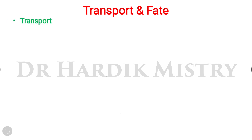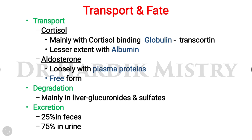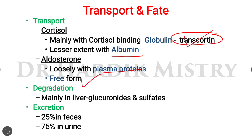Regarding transport and fate of steroid hormones: cortisol is mainly transported with cortisol-binding globulin (transcortin), and to a lesser extent with albumin. Aldosterone is loosely bound to plasma proteins and mainly travels in free form. Degradation occurs mainly in the liver as glucuronides and sulfates. Approximately 25% is excreted in feces and 75% in the urine.